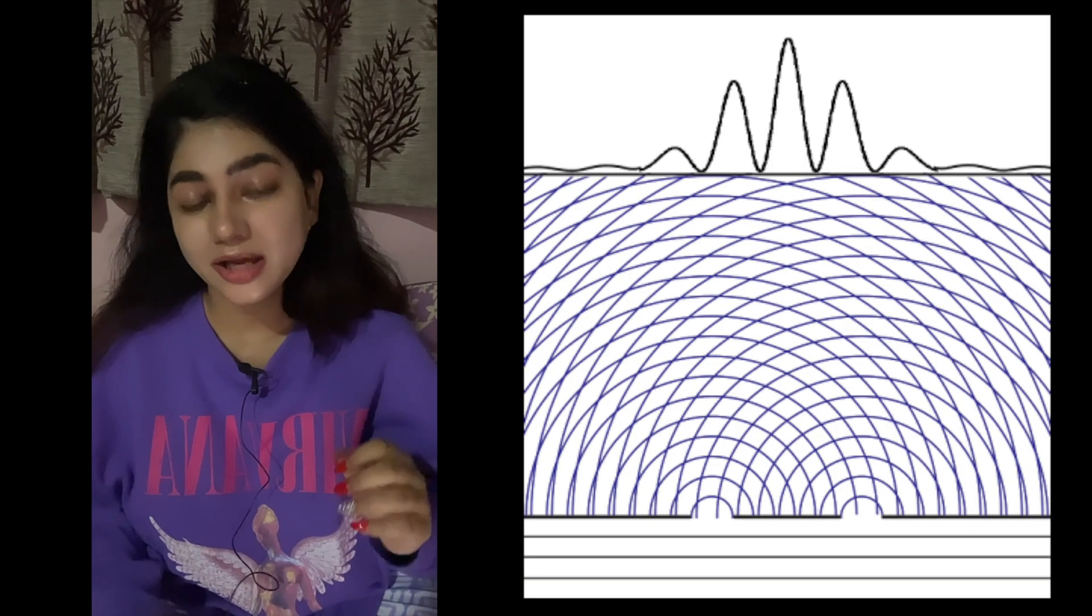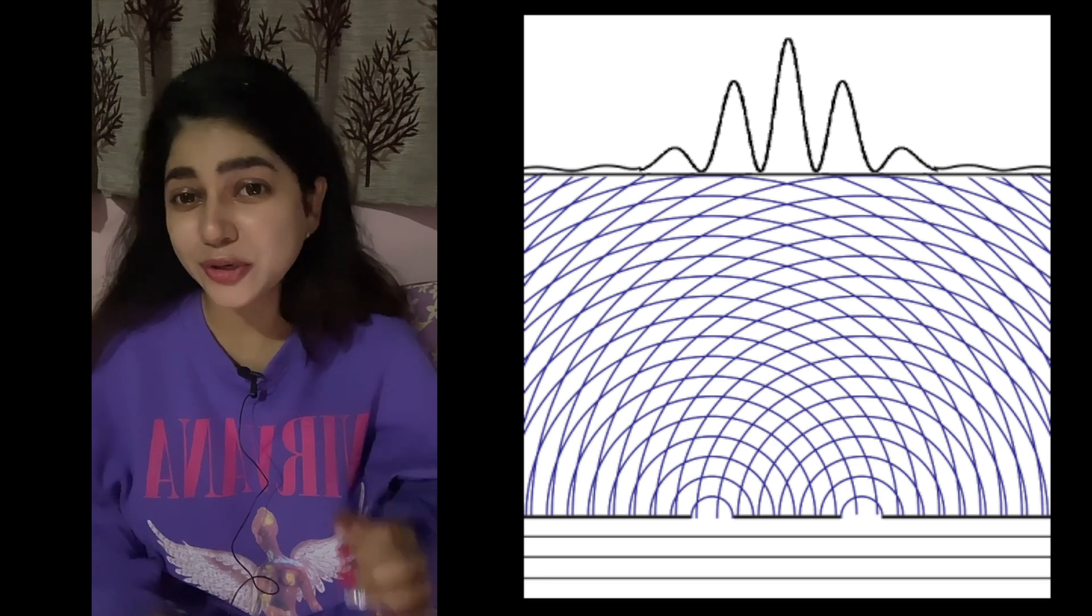It challenges our intuition because it shows that light bends and interferes like a wave instead of simply passing straight through the slit.